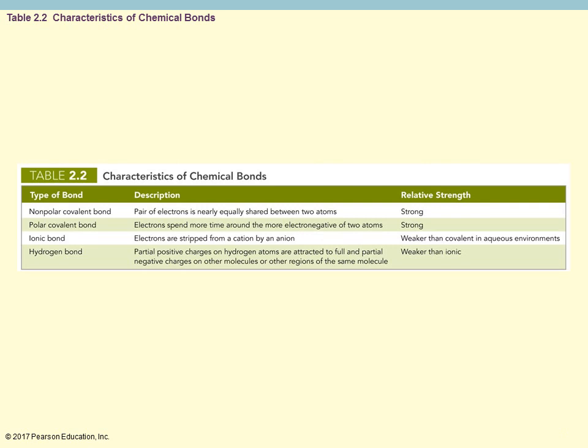This shows the different types of chemical bonds. Covalent bonds are classified together with subdivisions of polar versus non-polar. These are the types of bonds you're going to see relative to the study of biology.